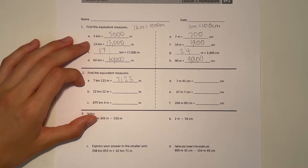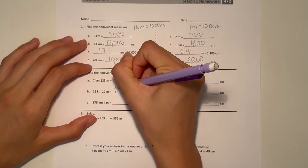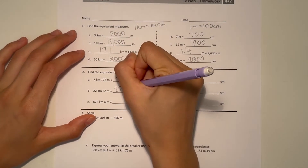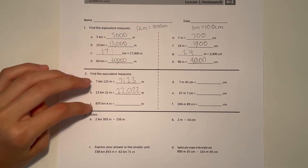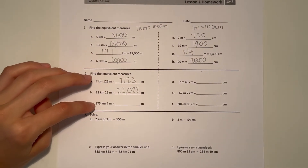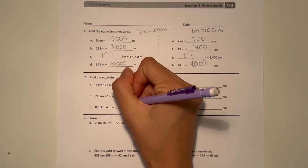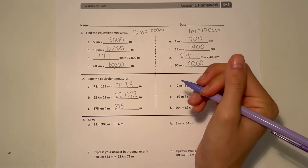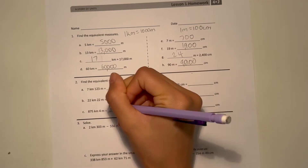B, 22 kilometers 22 meters. 22 kilometers times 1,000 is 22,000, and then we have 22 meters. And C, 875 kilometers and 4 meters. Well, 875 times 1,000 is 875,000, and then we just have 4 meters.